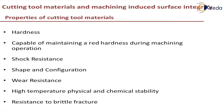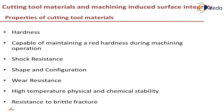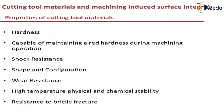These are the desired properties of cutting tool materials. First, we will start with hardness. The material which is used for cutting tool should be around 1.5 times harder than the work material. Whatever work material you are using, the cutting tool should be 1.5 times harder than the work material.